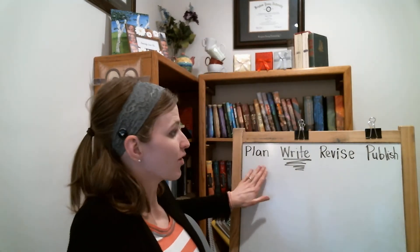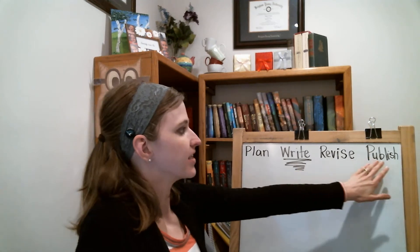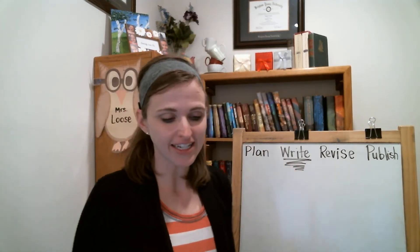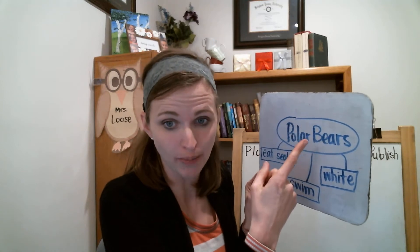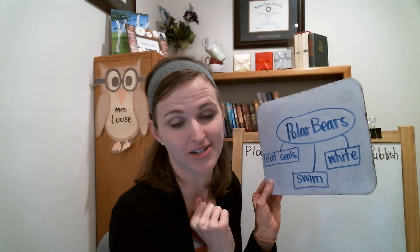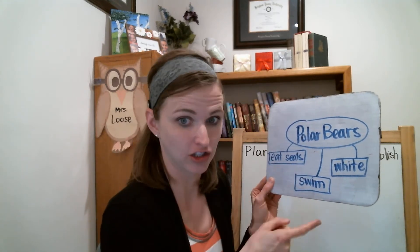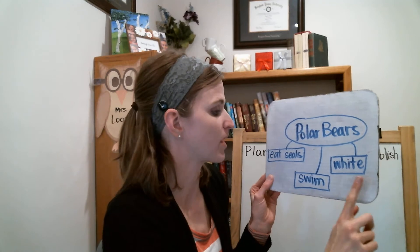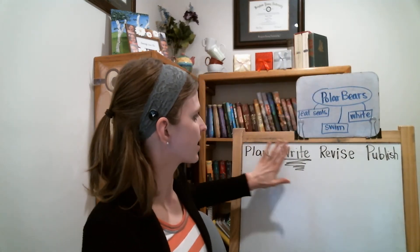It's time to do some more writing. We have four steps to our writing process this week: plan, write, revise, and publish. We are on step two. Do you remember our plan? My plan for my writing is to write about polar bears and how I want the zookeeper to put polar bears at the zoo. I put some details of things I learned about polar bears — they eat seals, they swim, and they are white.